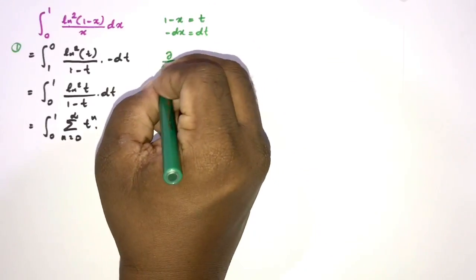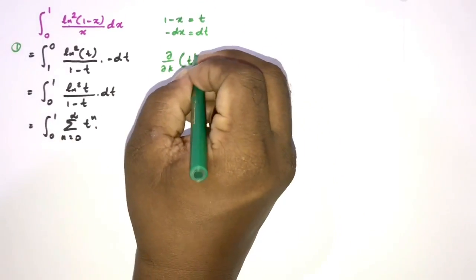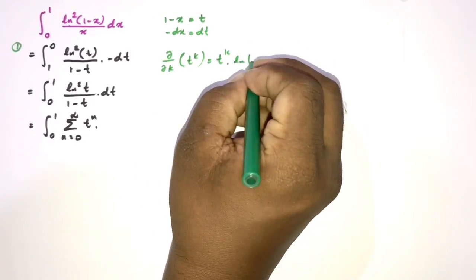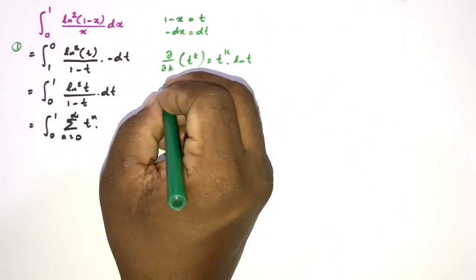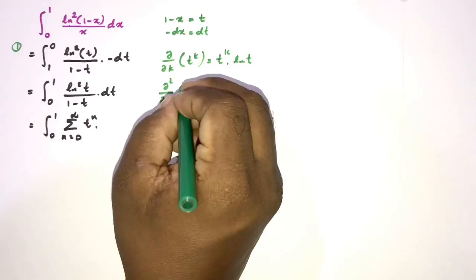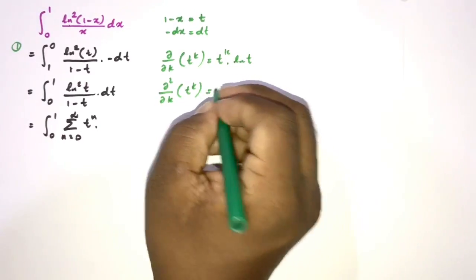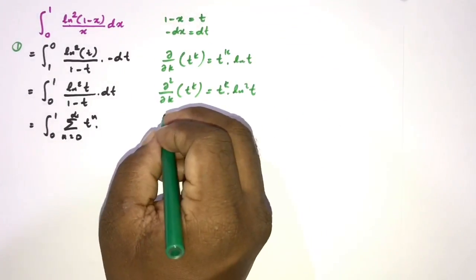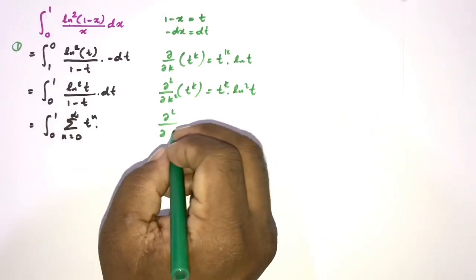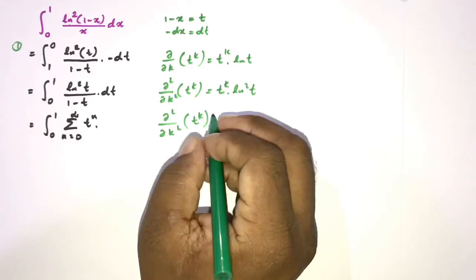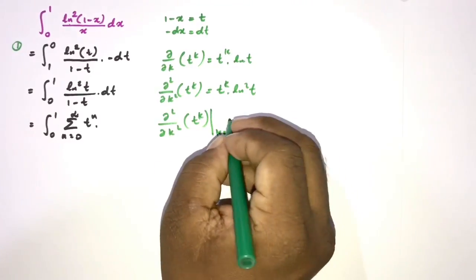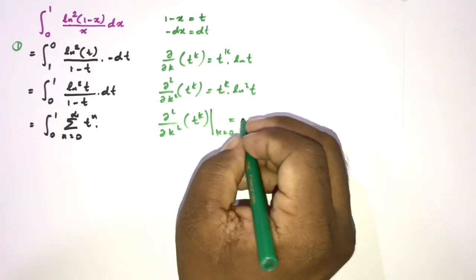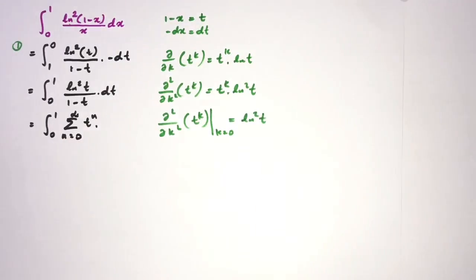We note that the partial derivative of t^k with respect to k is t^k · ln(t), and the second partial derivative of t^k with respect to k is t^k · ln²(t). So when k = 0, the second-order partial derivative of t^k equals ln²(t).